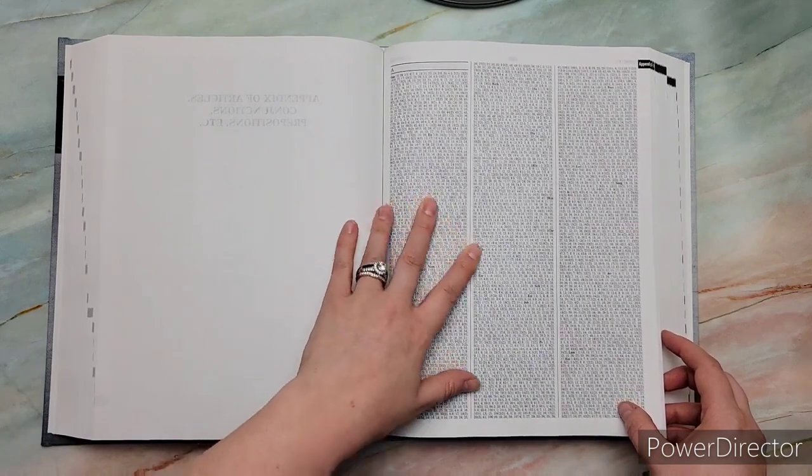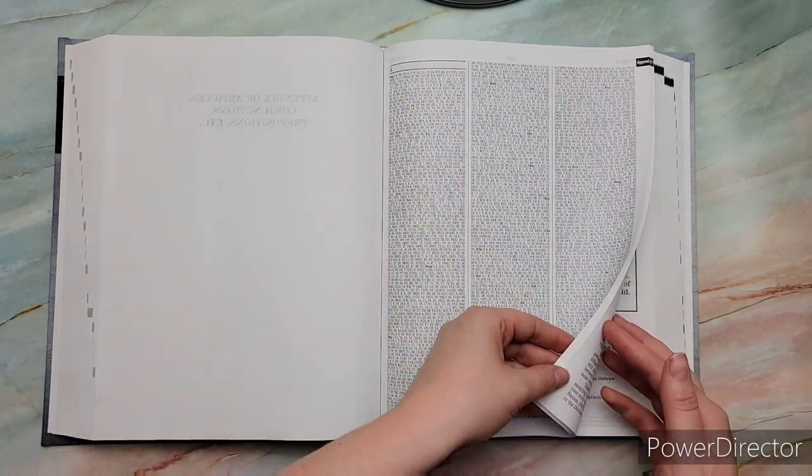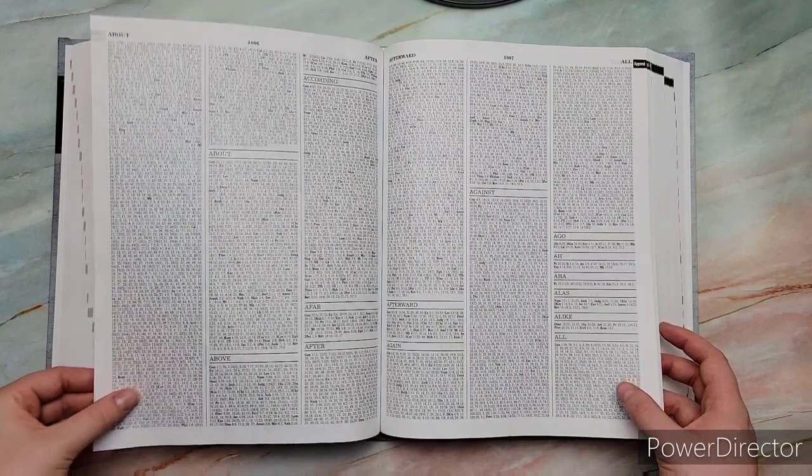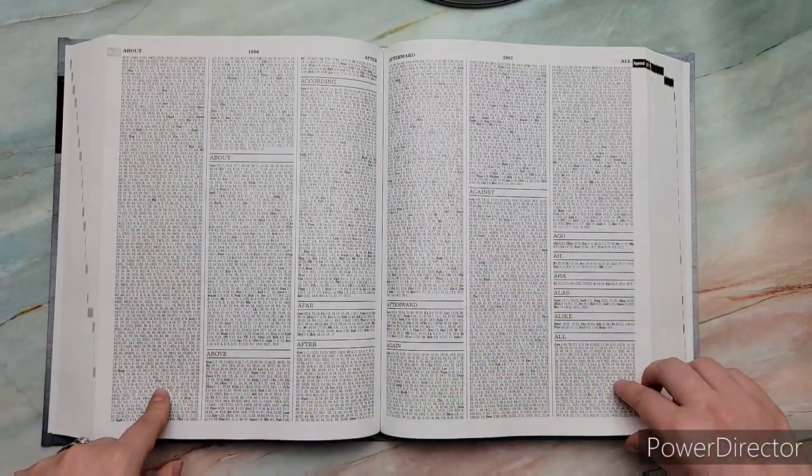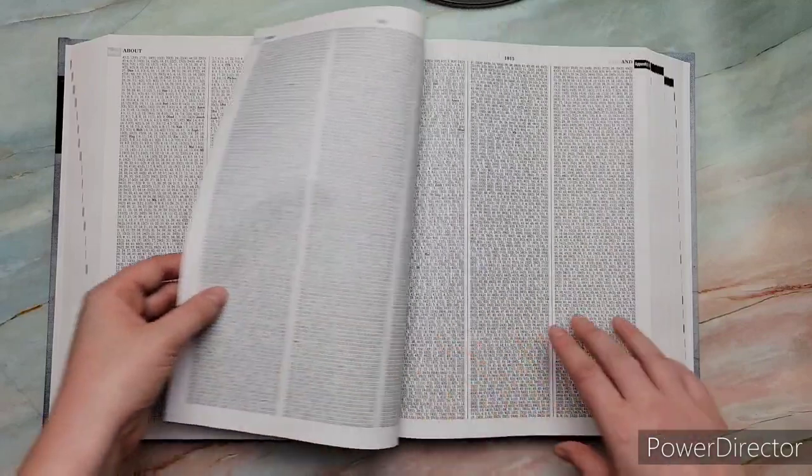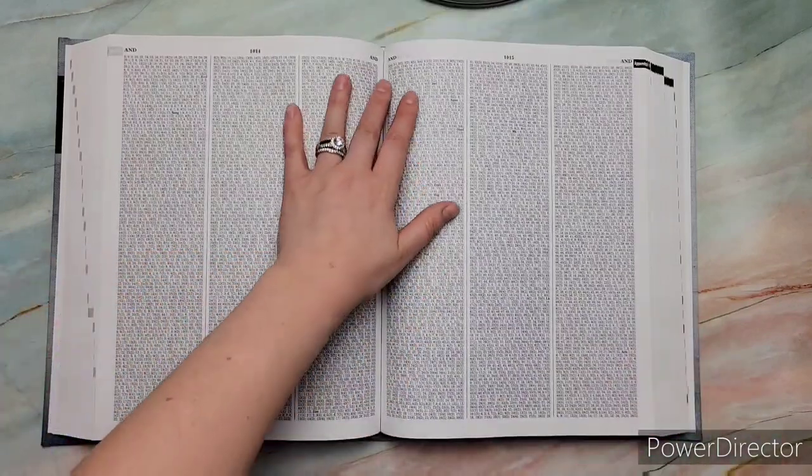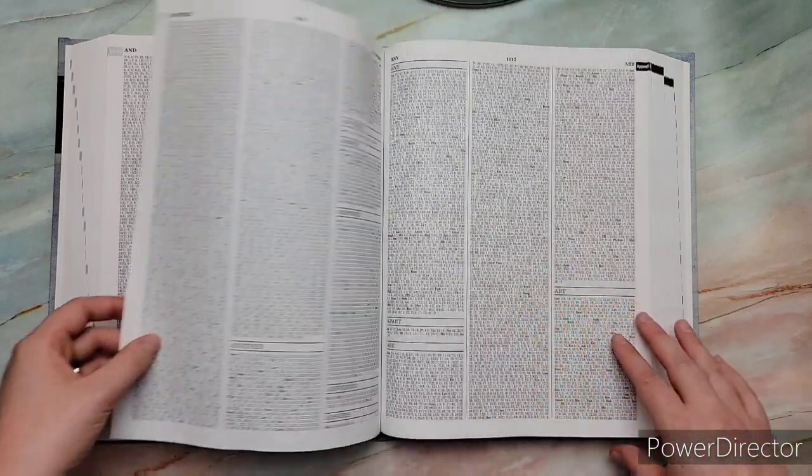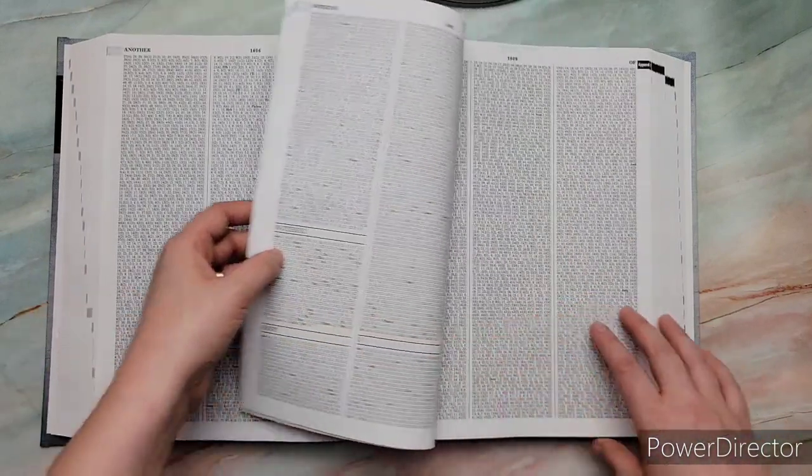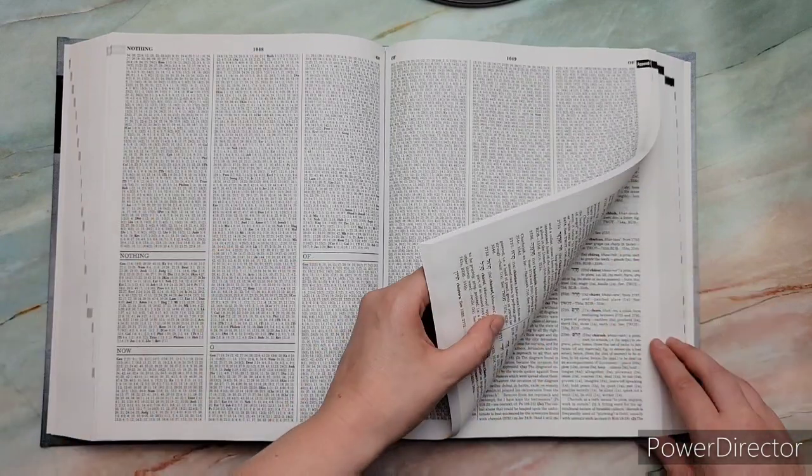And then it goes into how many times that word was translated in different words. So beseech 43 times, comfort 23, exhort 21 times, desire 8 times. And then it also gives you kind of like a little definition. So yeah, you can dig even deeper. I'm going to the other words that it was made, and it goes all the way over. So then as you turn towards the back of that, so this is how you use it. And I'm going to show you what else is in this.